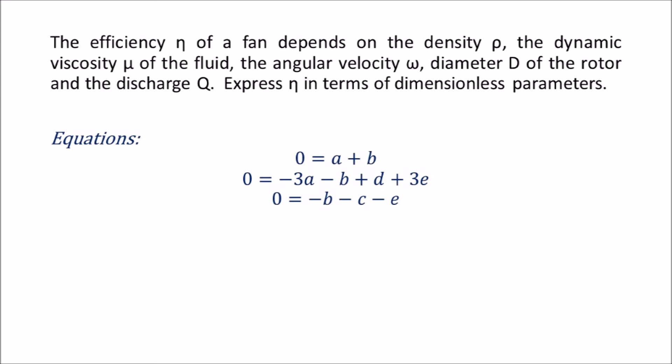That gives us three equations that we can use to solve for the unknown powers in our expression for efficiency. However, we have five unknowns, which means that to move forward with our solution, we're going to have to reduce this number. We can do this by expressing some of the unknown values in terms of other unknowns.